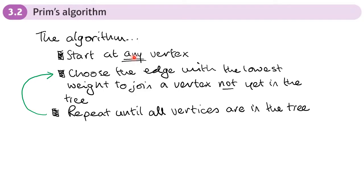you would with Kruskal's algorithm. Then we're going to choose the edge with the lowest weight to join a vertex not yet in the tree. Now we may find this edge with the lowest weight connected to any of the vertices which are already in the tree. You'll see this in a moment, and we basically repeat this last step